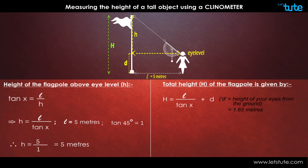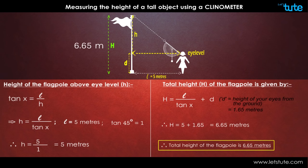By substituting the values in this equation, we get H equals 5 plus 1.65, which equals 6.65 meters. Thus, the height of the flagpole is 6.65 meters.